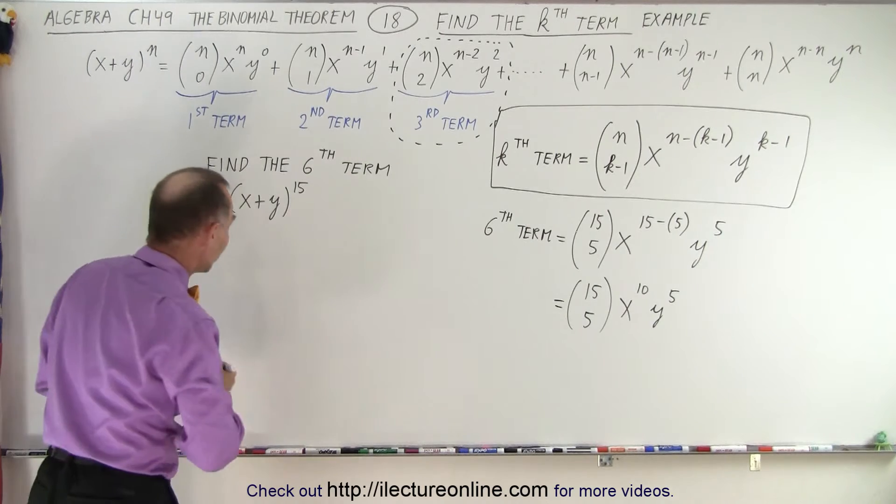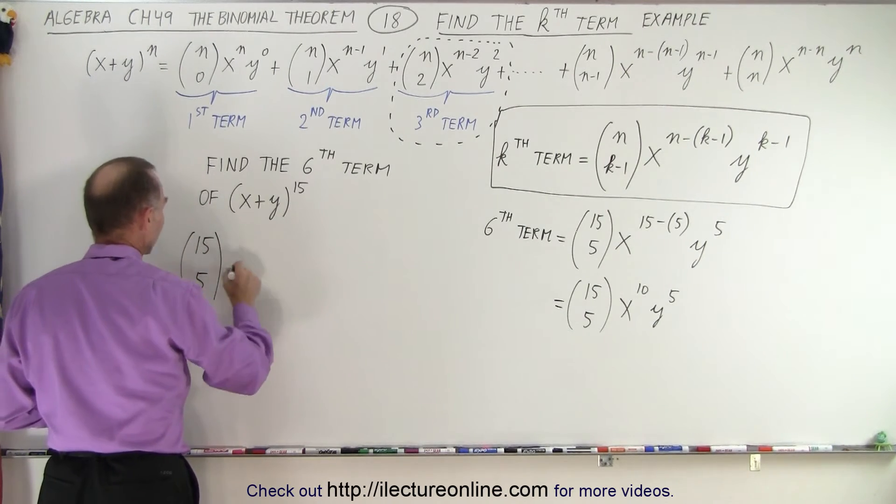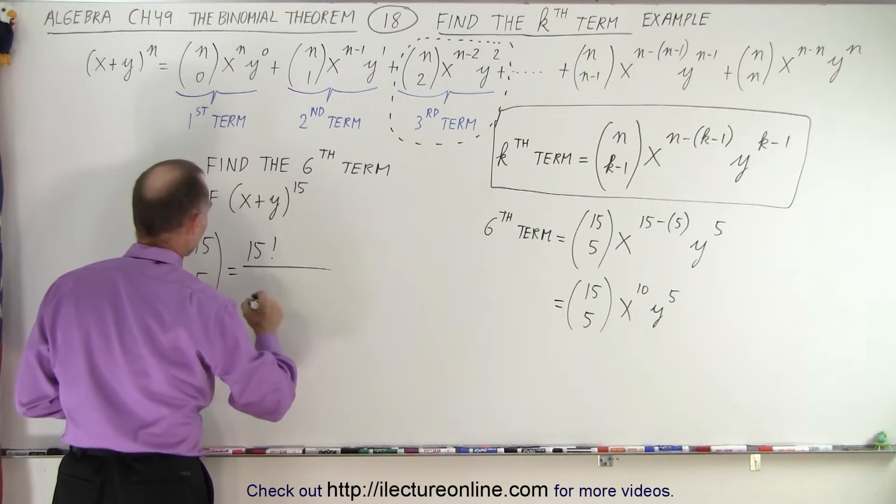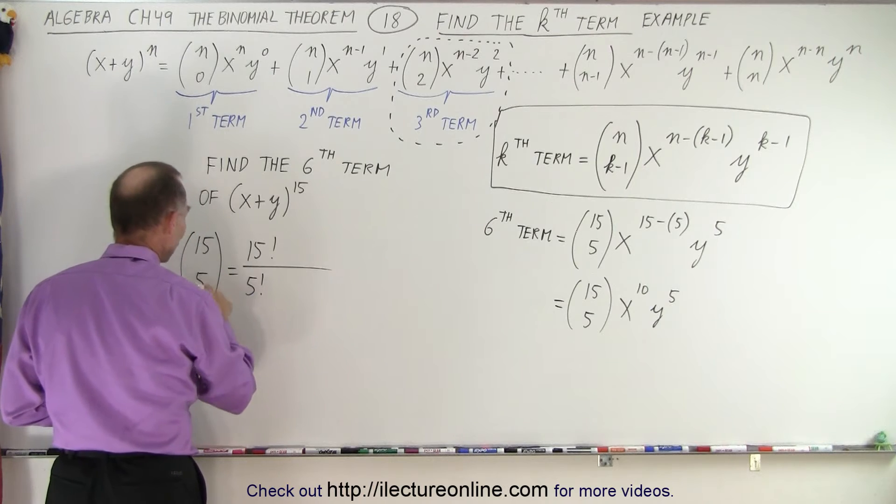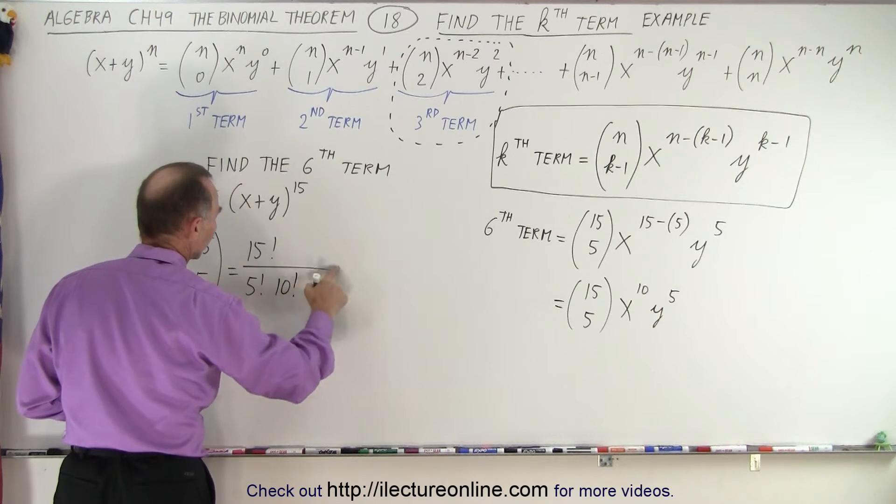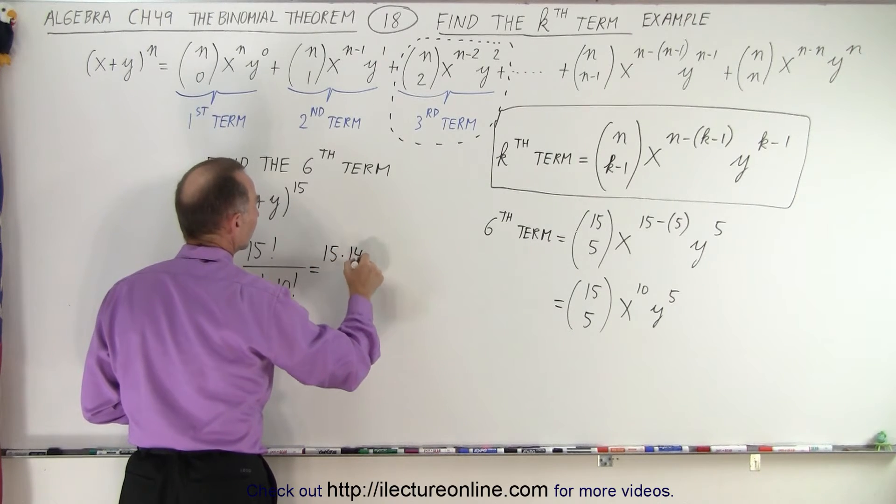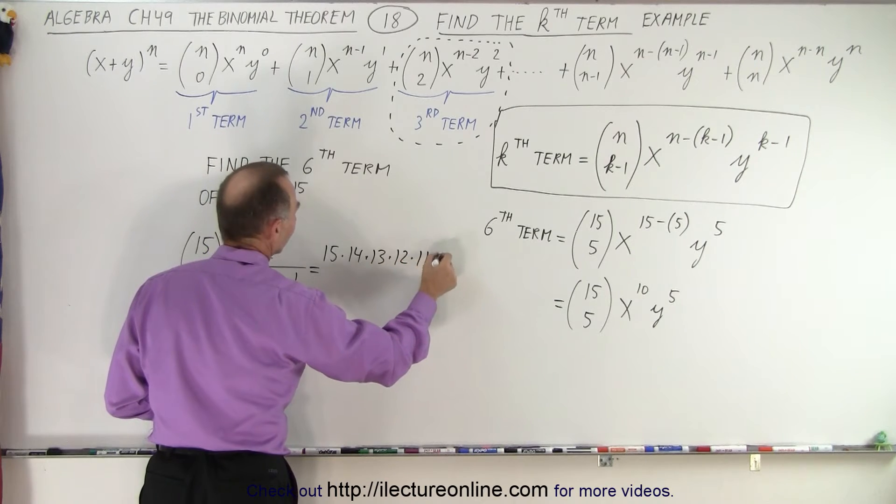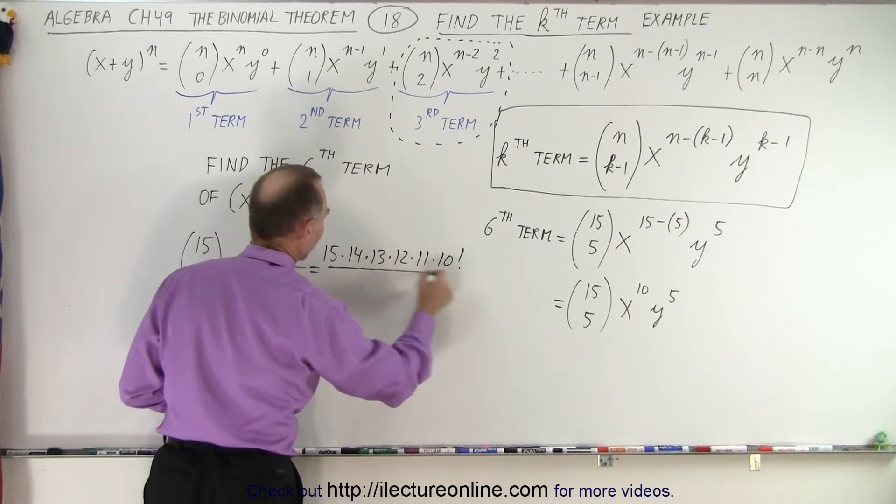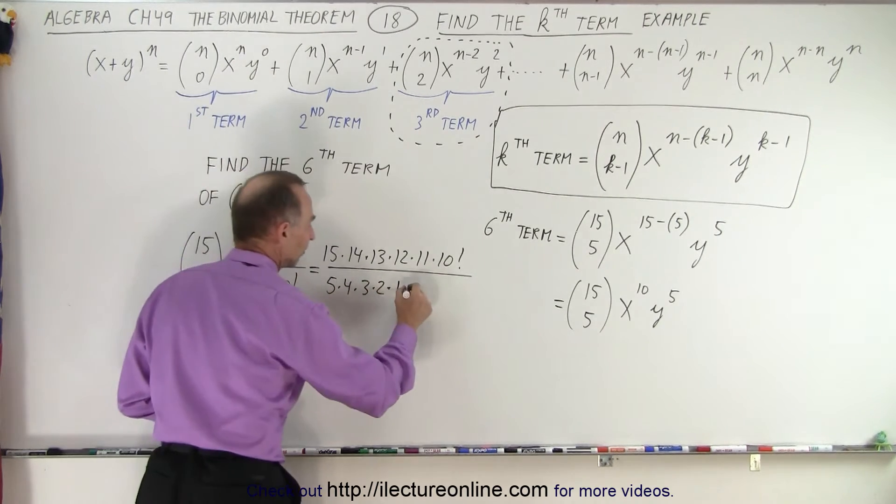Now we still need to solve for 15 choose 5. And we realize that's equal to 15 factorial divided by 5 factorial times 15 minus 5, which is 10 factorial. So this is equal to 15 times 14 times 13 times 12 times 11 times 10 factorial divided by 5 factorial, which is 5 times 4 times 3 times 2 times 1, and times 10 factorial.